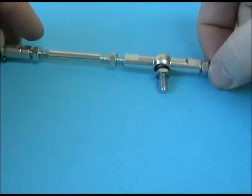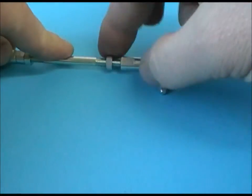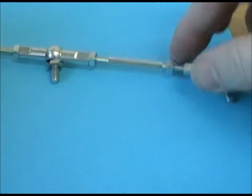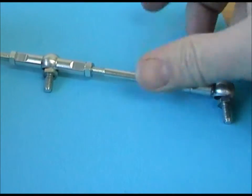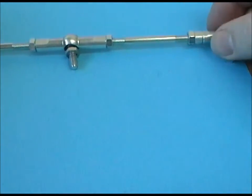And then once you've got your settings, once you've got your distances, just lock the nuts off. Remember which way they turn. And that's it, your linkage is set.